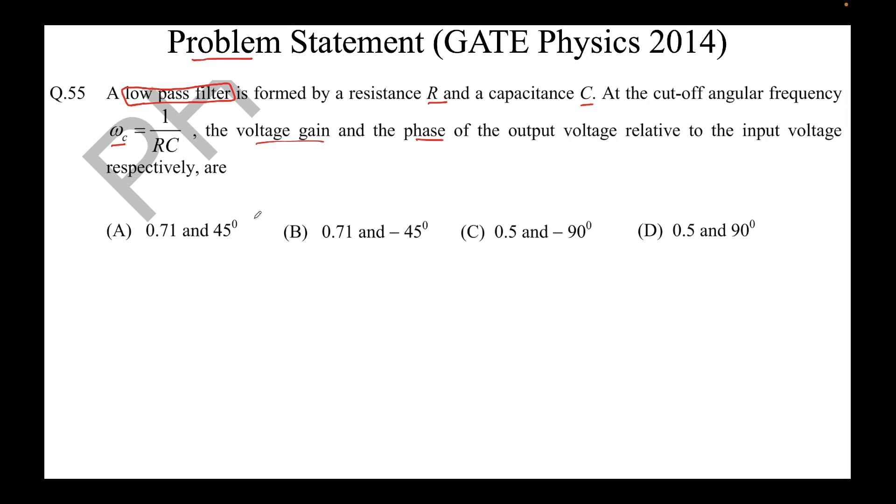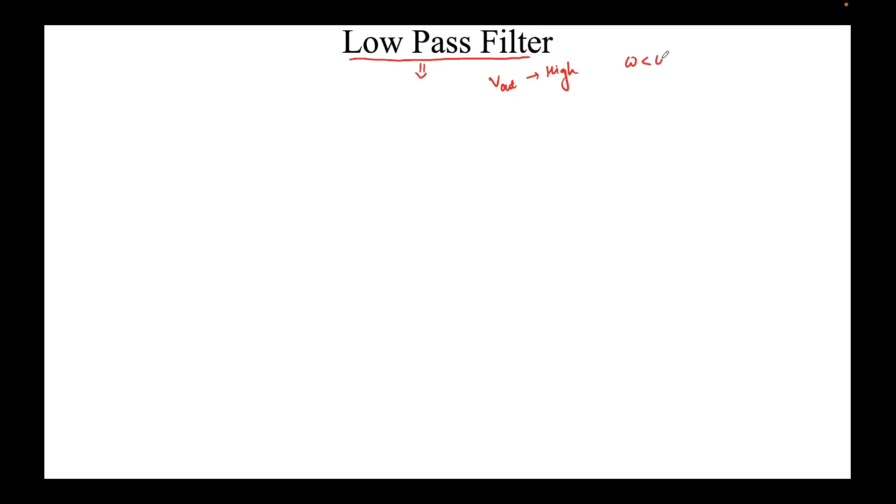Before we start solving this problem, let's look at some related concepts. What is a low pass filter? As the name suggests, it is a filter which allows only certain frequencies to pass through — in this case, it allows only low frequencies to pass through. That means the value of V_out will be high only when the applied frequency is less than some cutoff frequency, which we call omega_c.